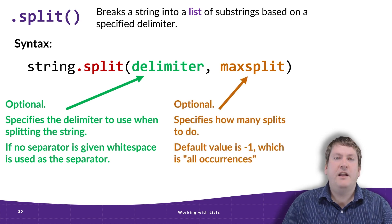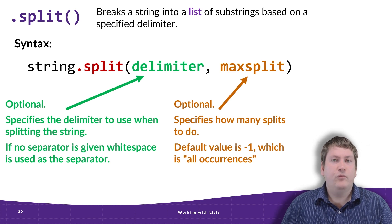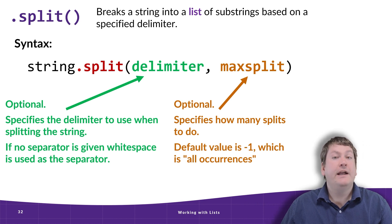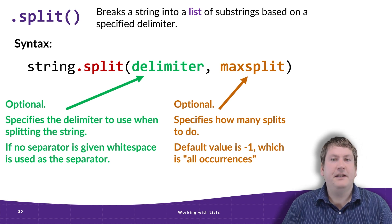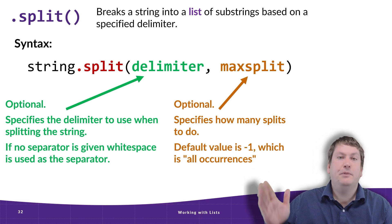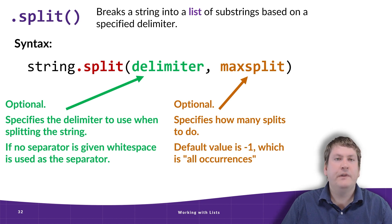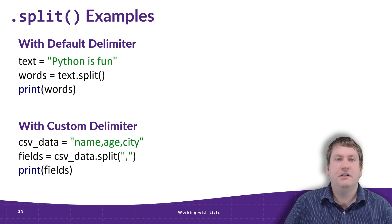The other parameter, which we rarely use, is max split — the number of times we're going to split the string. It defaults to negative one, which means split the string wherever the delimiter occurs. In most examples we won't even see it given. Now let's take a look at some examples to make this clear.